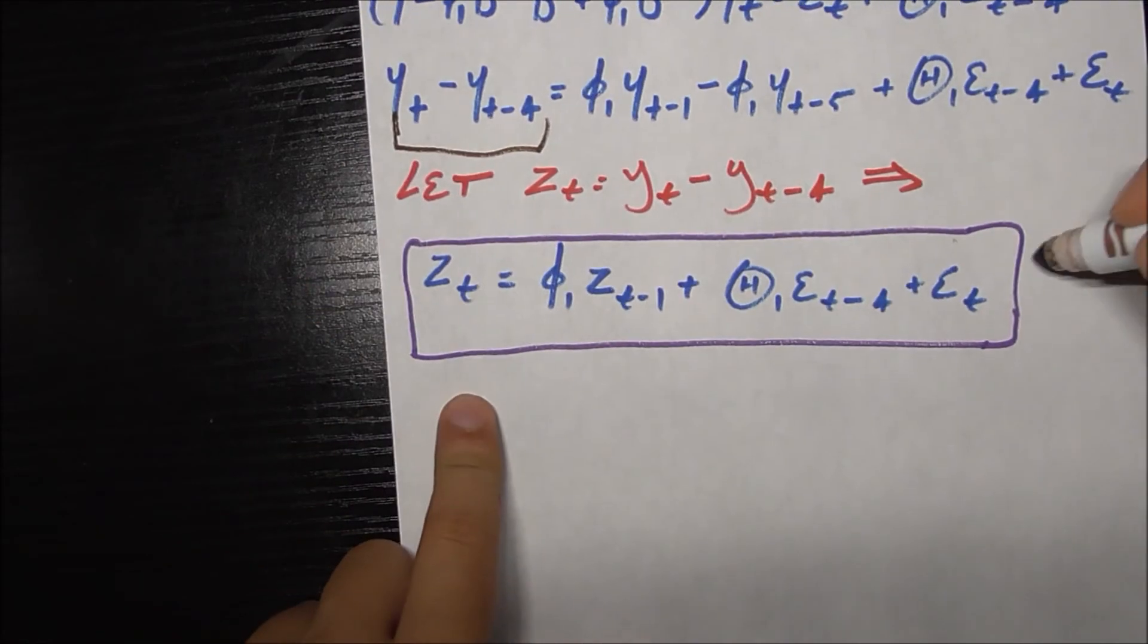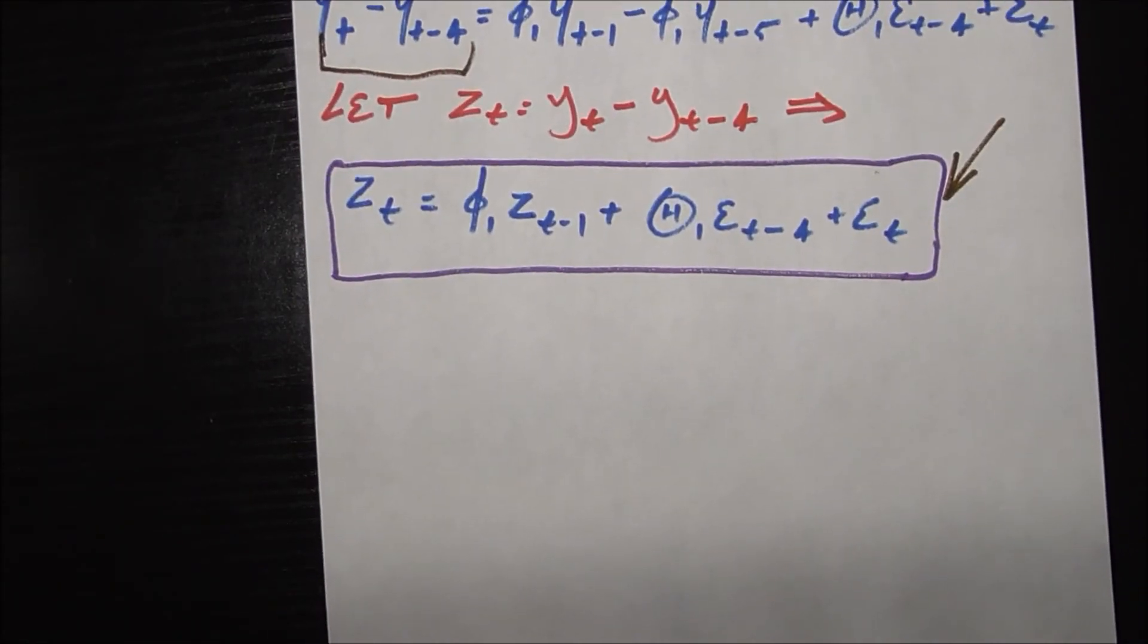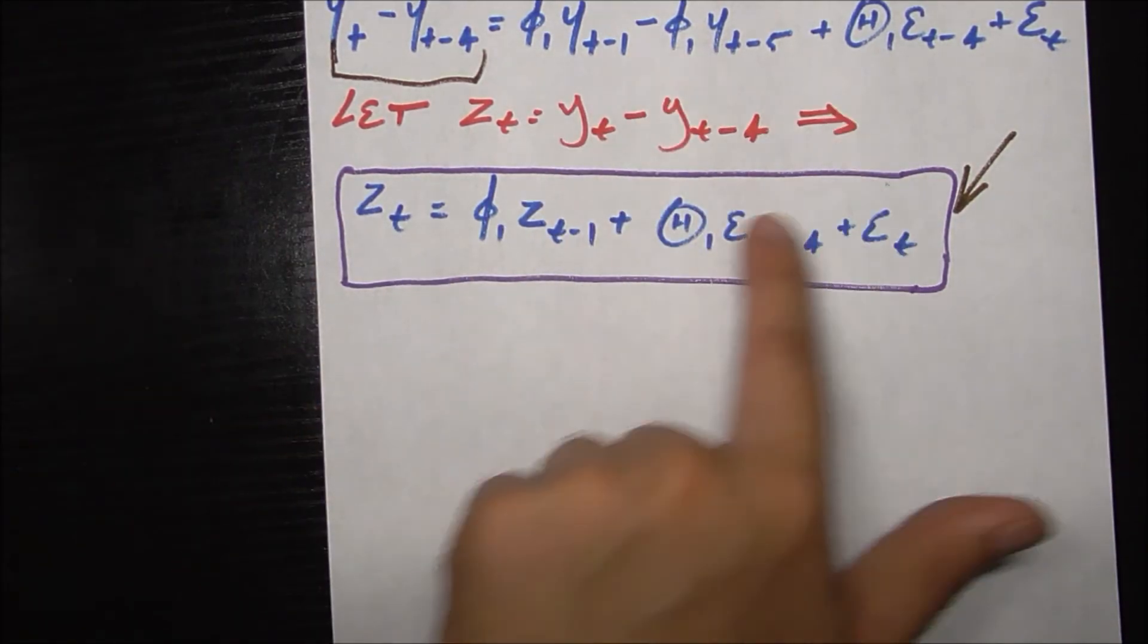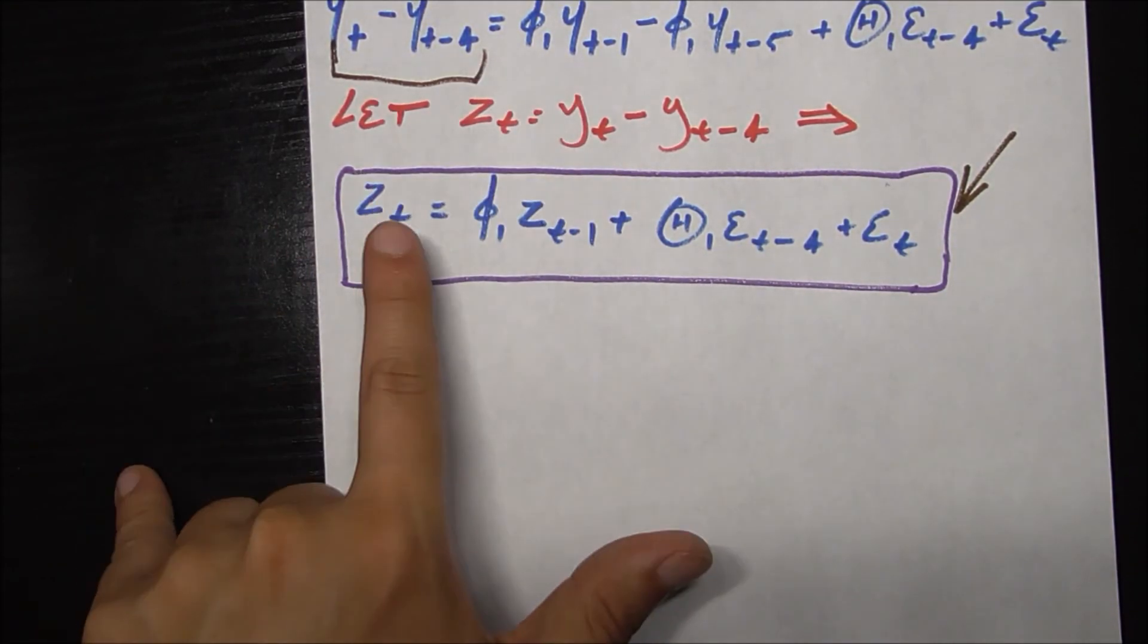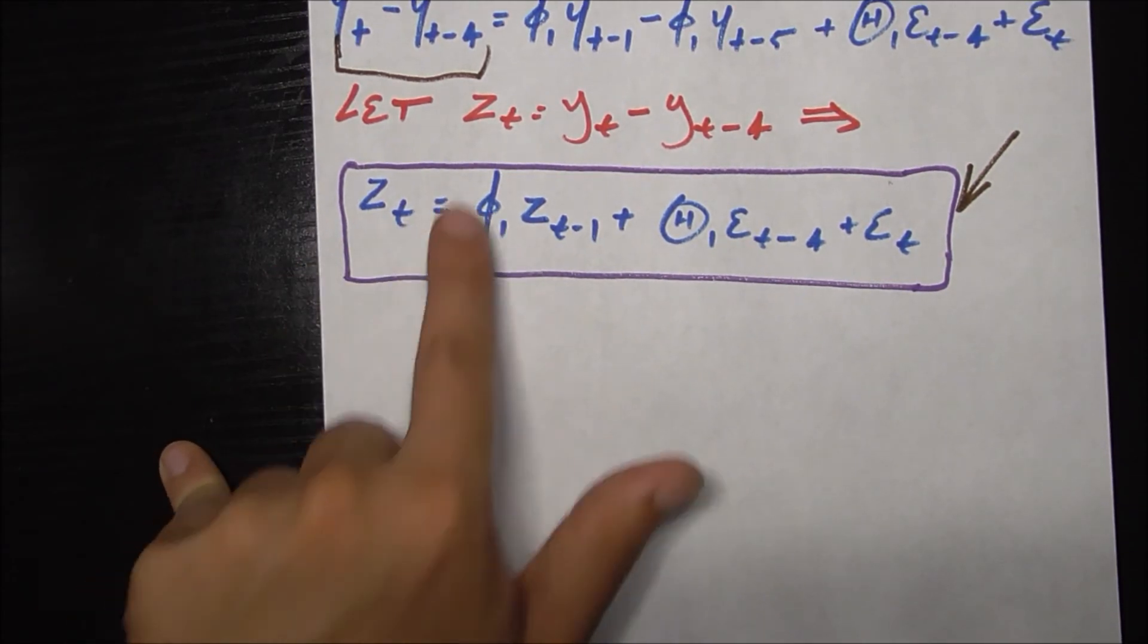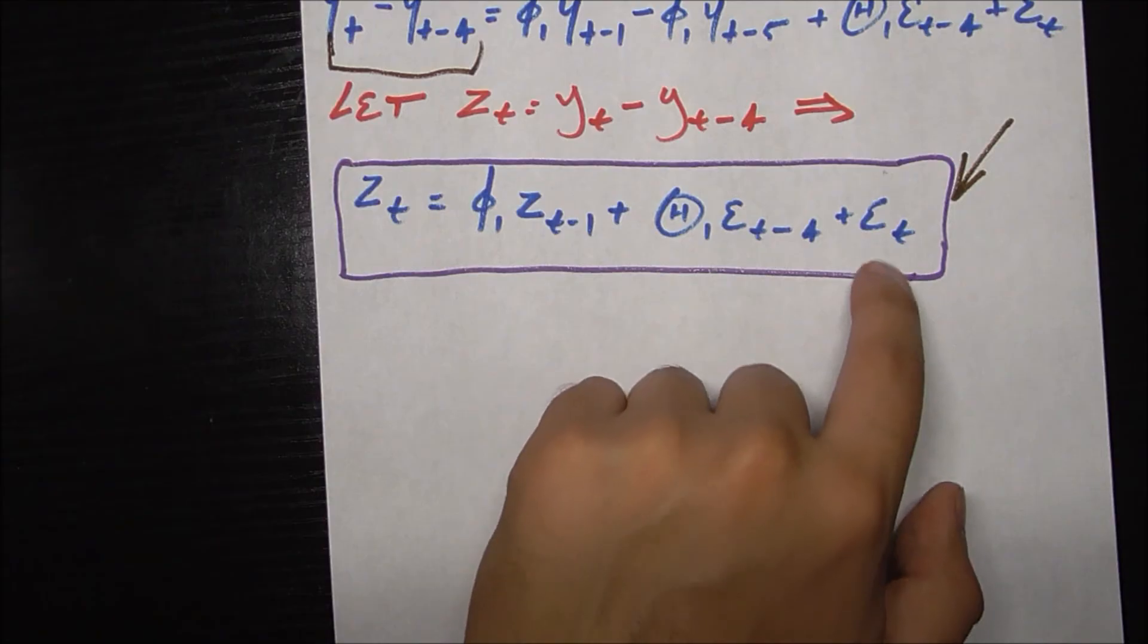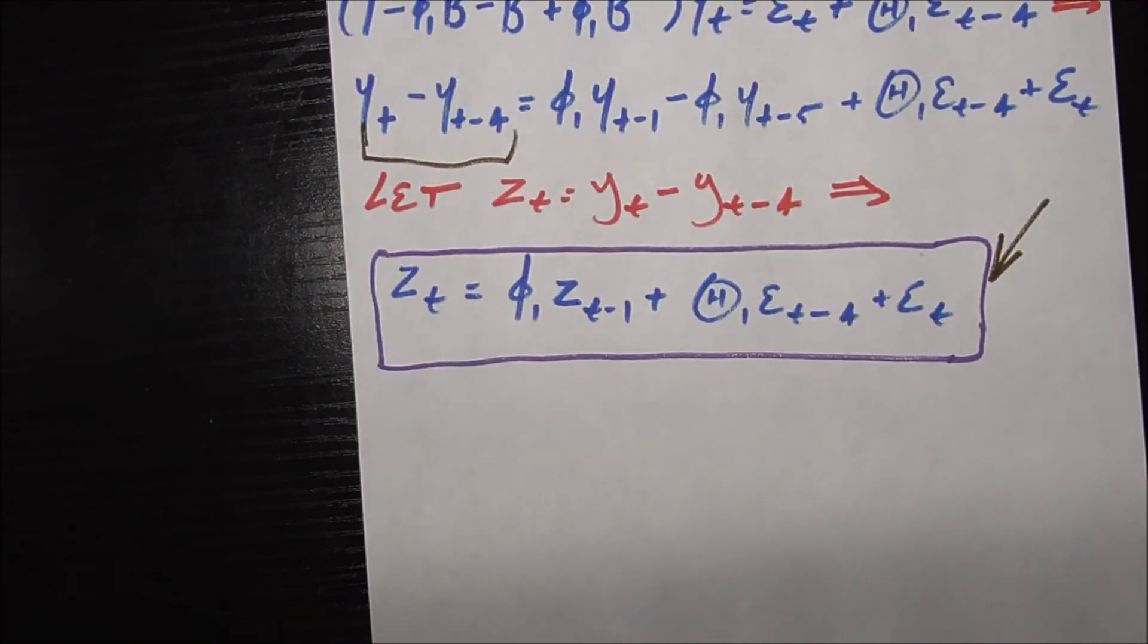Now this makes a lot more sense. This is saying that I want to make a prediction about my new time series z sub t, which again is the difference version of my original time series. To do that, I'm going to be saying that it's going to be some parameter phi sub 1 times that new time series one period in the past plus some other parameter times my error four periods in the past plus my error today. So we can see all the pieces at play here and there were three pieces.